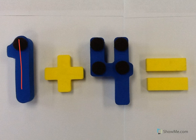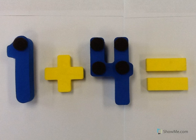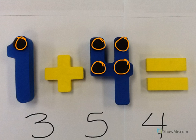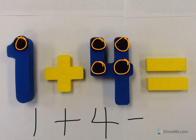One, two, three, four, five. Let's add the touch points. Ready? One, two, three, four, five. Point to the number five. Nice. One plus four equals five. Good.